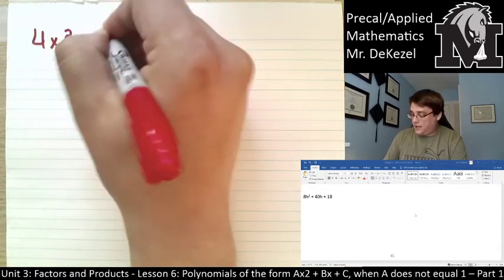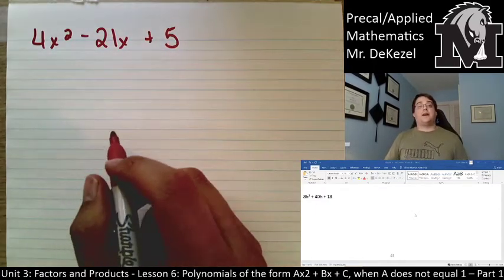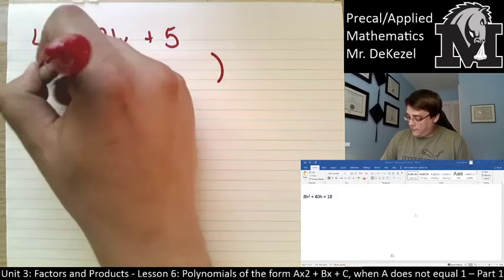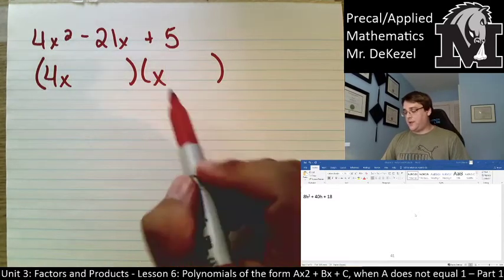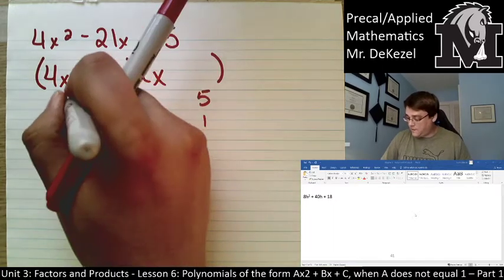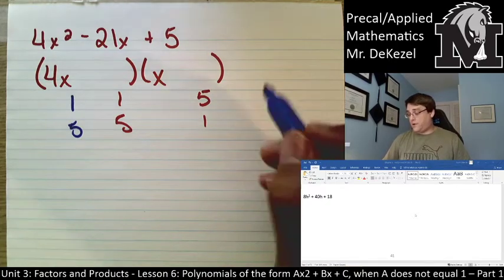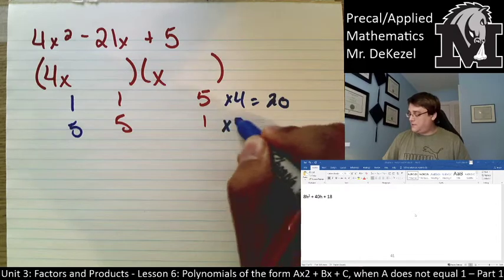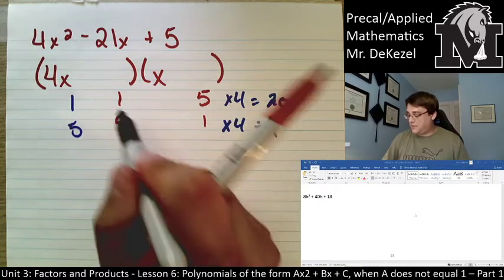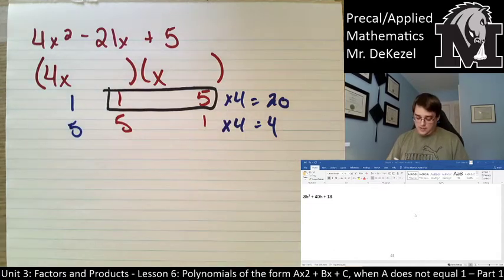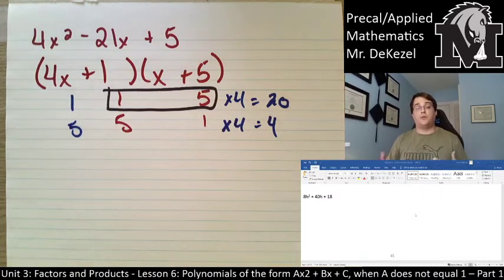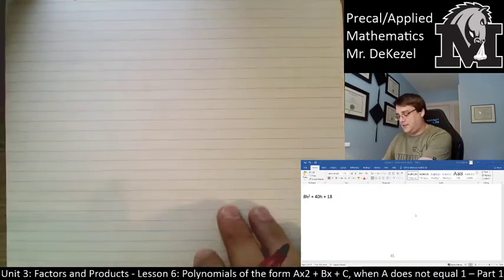Next: 4x squared minus 21x plus 5. Greatest common factor is 1, so we write our brackets. Let's try 4 and 1: 4x and x. Numbers that multiply to 5: just 1 and 5, or 5 and 1. We cross-multiply: this side by 1 stays 1 and 5; this side by 4 gives 20 and 4. Looking for blue numbers that add to 21: 1 and 20 — yes! So we take the original pair 1 and 5 and place them: (4x - 1)(x - 5). We were lucky — 4 and 1 worked on the first try.